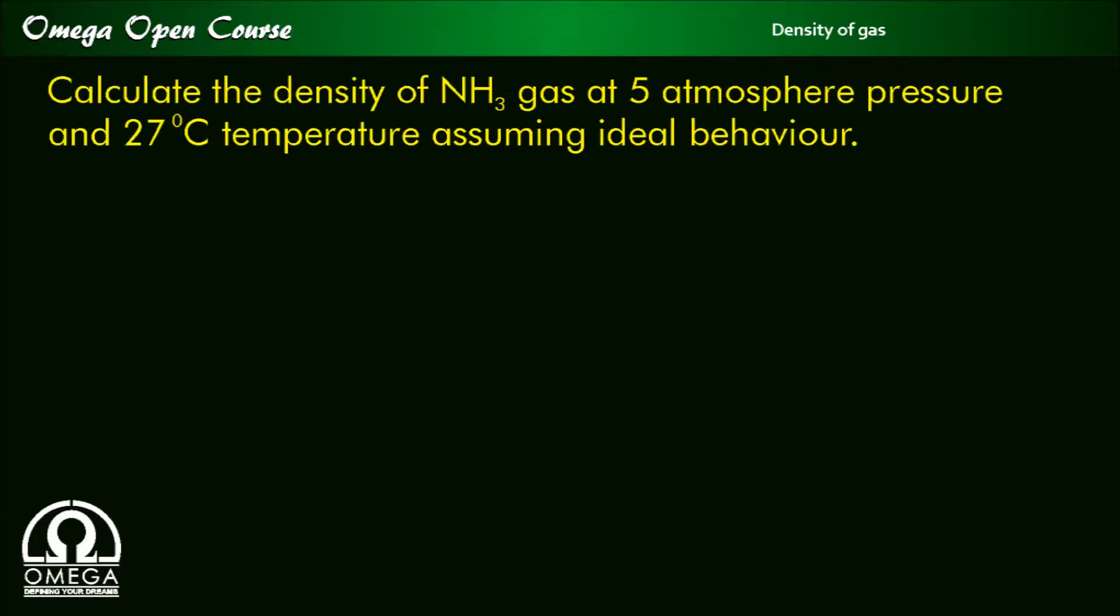Calculate the density of ammonia gas at 5 atmosphere pressure and 27 degree Celsius temperature assuming ideal behavior.